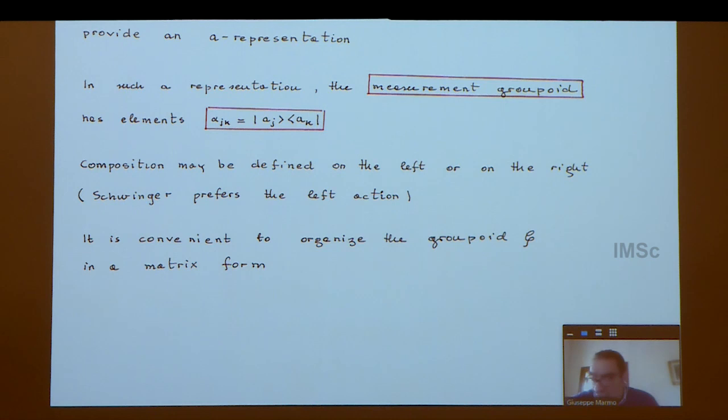By using the expression in terms of bra and ket, the measurement symbols of Schwinger have the form I've written here, with a bra and a ket. It's clear the composition can be defined either on the left or on the right. Usually Schwinger preferred the left action. If you take the full set of transitions and organize in matrix form, next please.